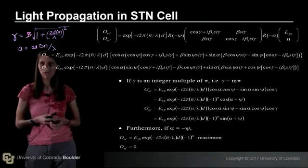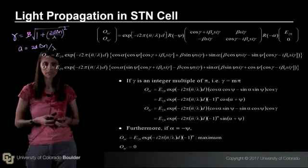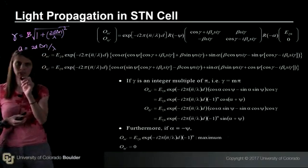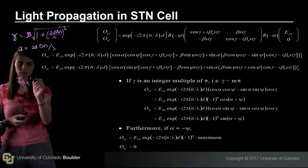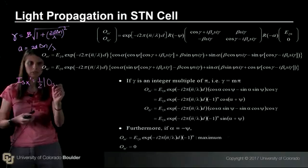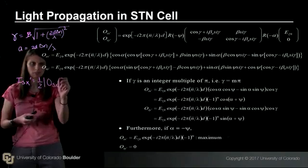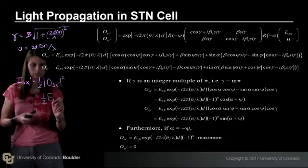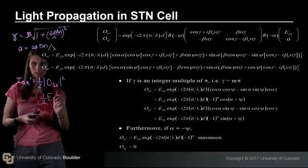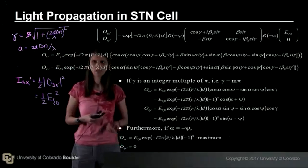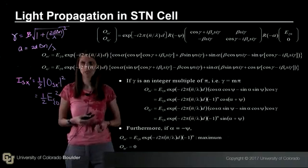And so this reduces down if gamma is an integer multiple of pi, as you can see here. And at the maximum transmission, we can write that I of s x prime equals one-half absolute value of E s x prime squared, and this is equal to one-half E sigma zero squared. So this is telling you that the cell has 50% transmission, which is very similar to that of the twisted nematic cell.